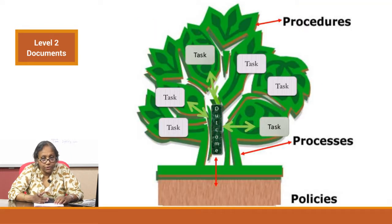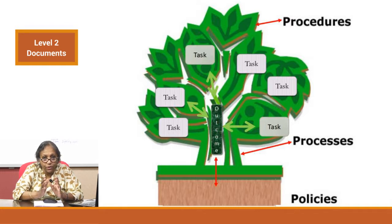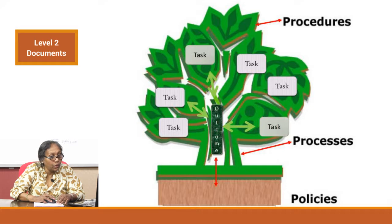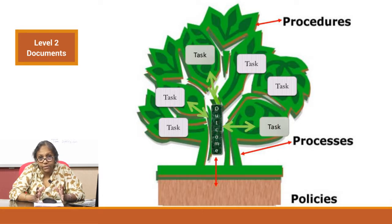Let us go back to the tree analogy once again to understand how these things are interrelated. We talked about the policies flowing through the processes to become the procedures. Today let us look at the reciprocal also. In this analogy, a single branch or cluster of leaves represents one task or one procedure — maybe a testing procedure, maybe a non-testing procedure, but it is one activity. Many activities together will flow together to become the outcome — that is the process being satisfied because every procedure has been completed as per the standard's requirement.